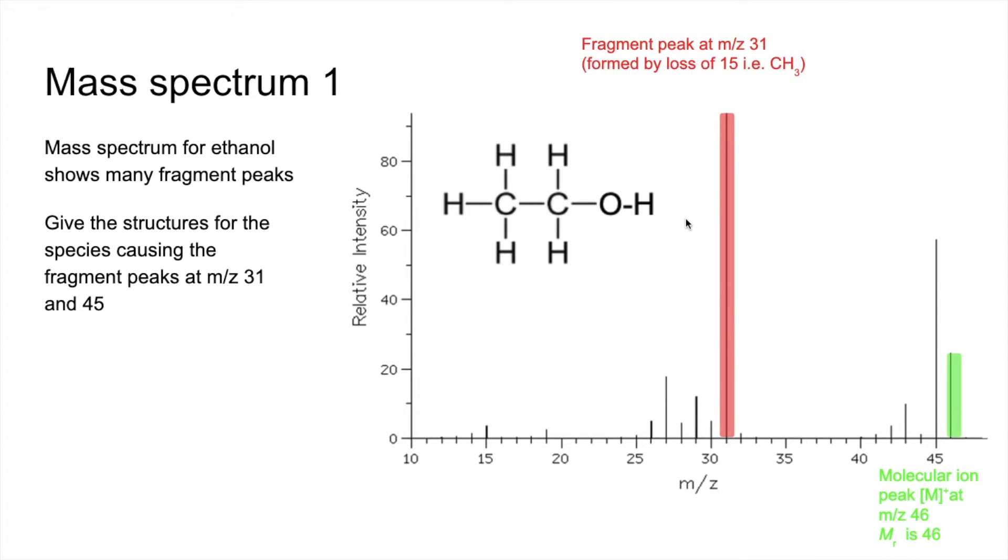The fragment peak at m/z 31 formed by a loss of 15, i.e. CH3, is due to the CH2OH plus fragment. Whatever you do, don't forget the plus charge. Everything that causes a peak in a mass spectrum has a positive charge.